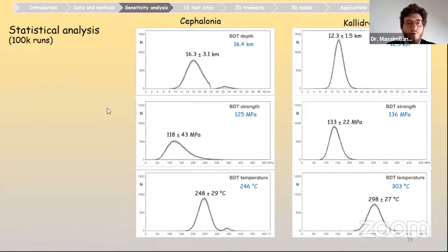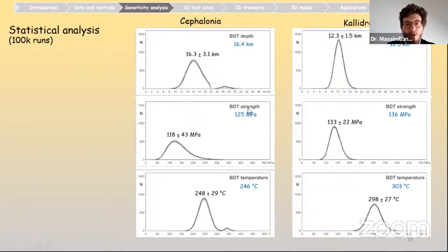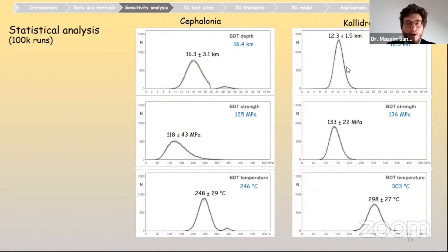We tried to verify whether there could be synergistic effects with these joint variations. In terms of statistical analysis results, we compared them for three variables — BDT depth, BDT strength, and BDT temperature — with values obtained from the reference profiles. The peaks of the statistical distributions for all three variables tend to fit quite well with the reference profile values, and this is observed for both test sites.